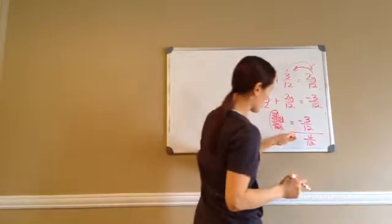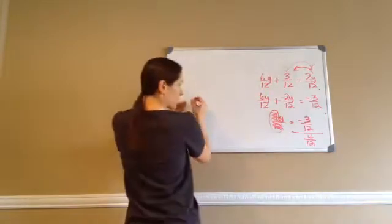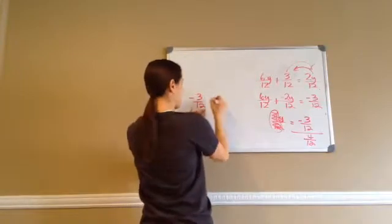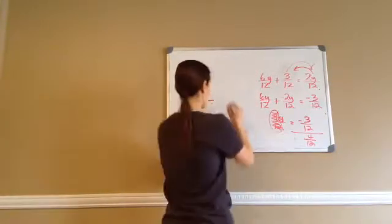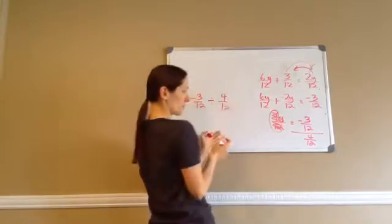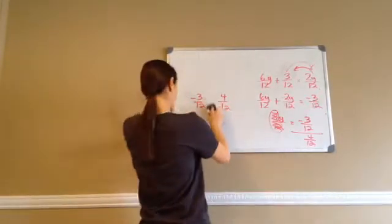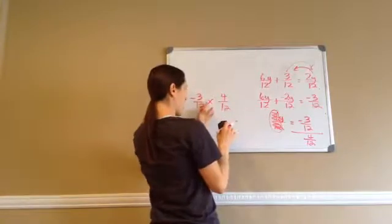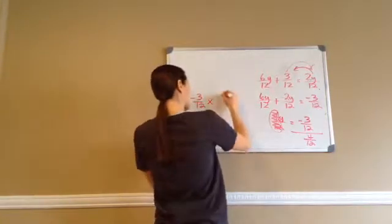Hopefully you remember that you can write this in a different form. So: negative 3/12 divided by 4/12ths. And hopefully you remember that you cannot divide fractions — you're going to multiply them. So when you do that, this changes from 4/12ths to 12 fourths.